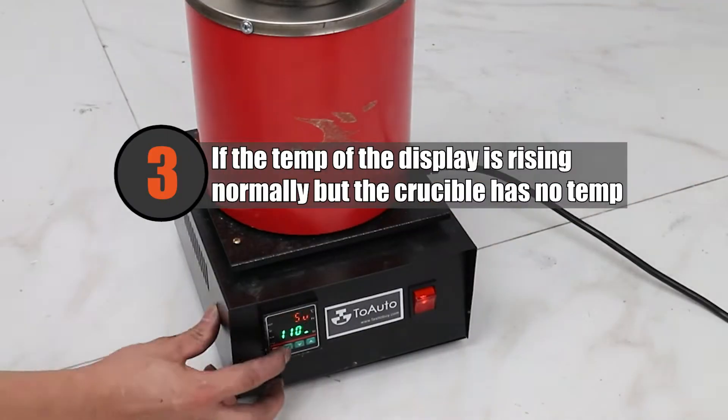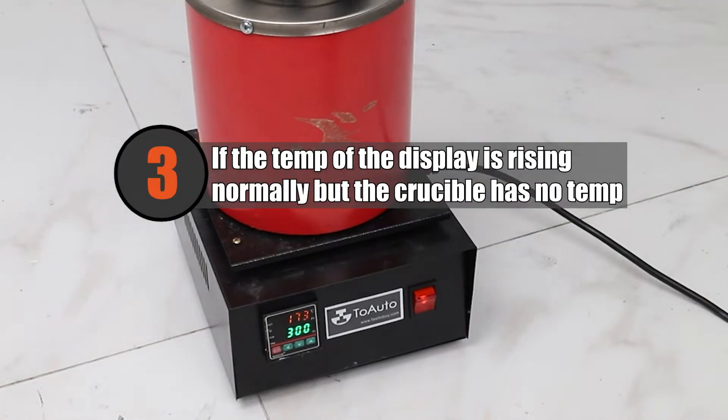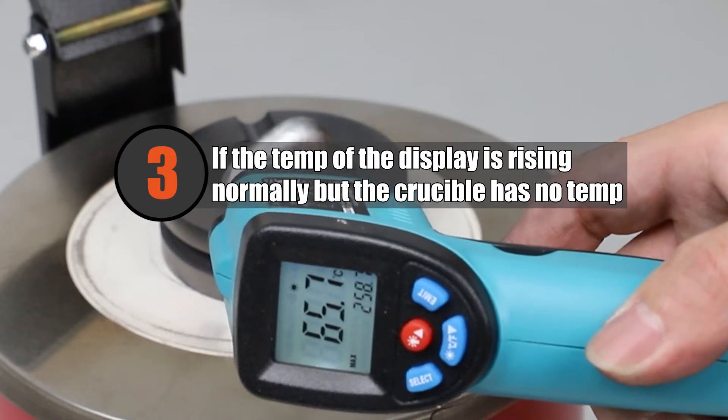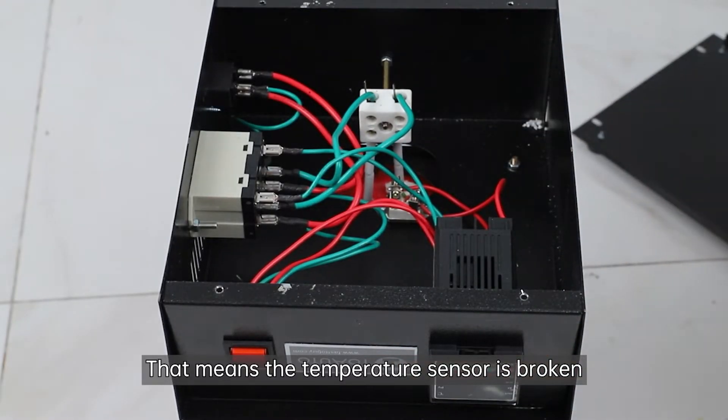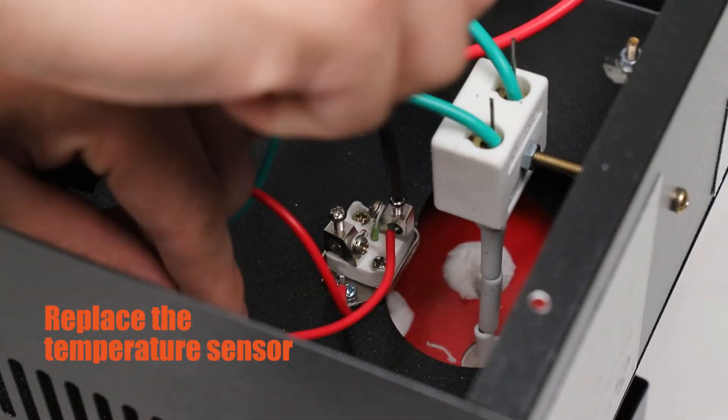Three, if the temp of the display is rising normally but the crucible has no temperature, that means the temperature sensor is broken. Replace the temperature sensor.